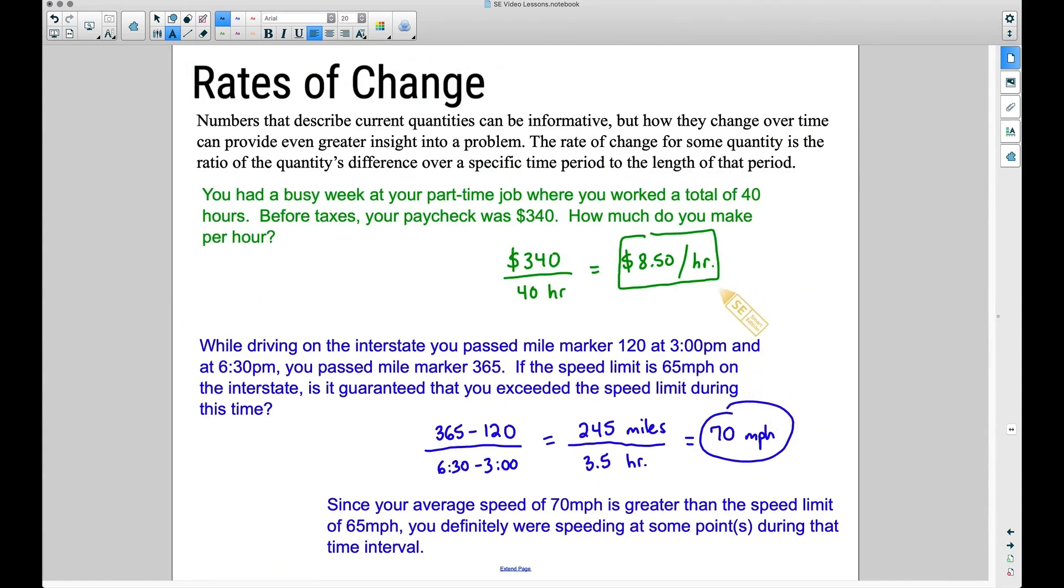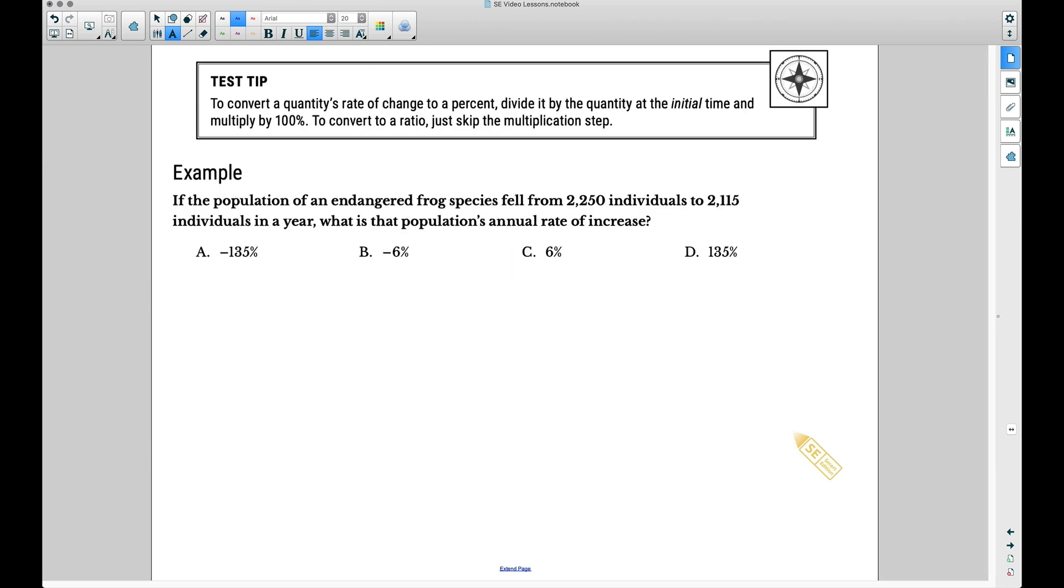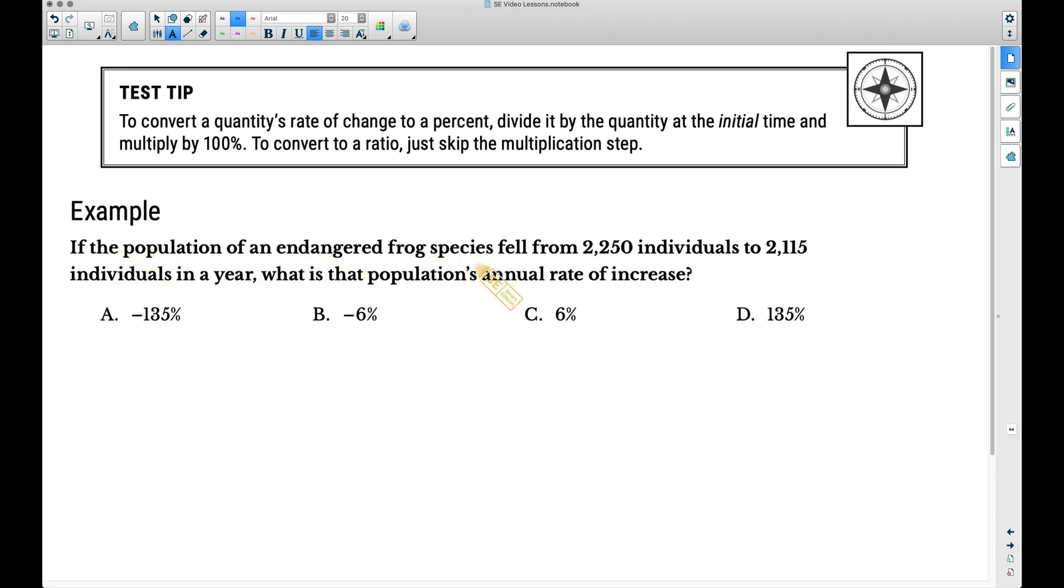So what I want you to focus on here is that we have rates of change. We have dollars per hour, we have miles per hour, but now we can apply percents to this as well. And that's what we're going to look at in this last example. If the population of an endangered frog species fell from 2,250 individuals to 2,115 individuals in a year, what is the population's annual rate of increase?